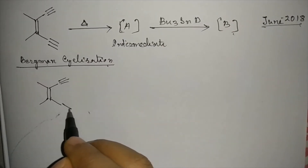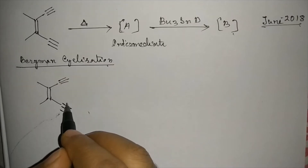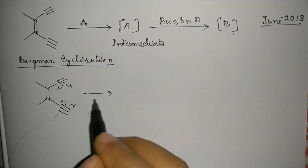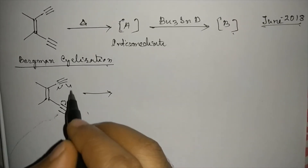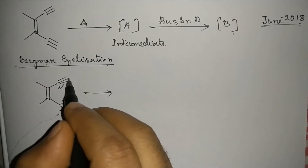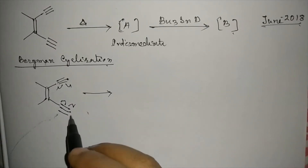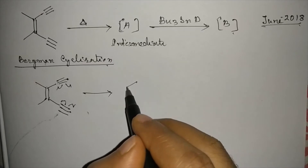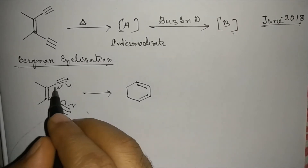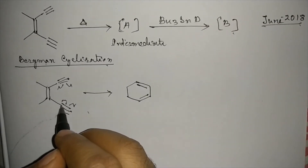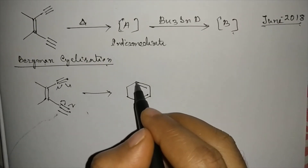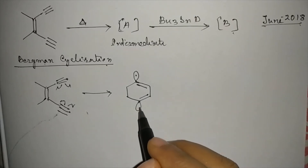...then these two bonds will cleave, and these two electrons will form a bond between these two carbon atoms. So a six-membered ring will be formed. There is a double bond here, and this carbon will bear one electron and this carbon will bear one electron.